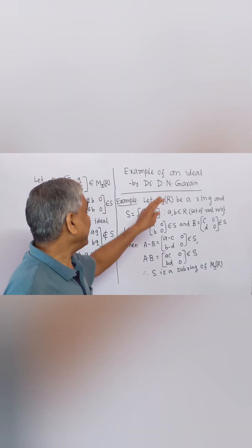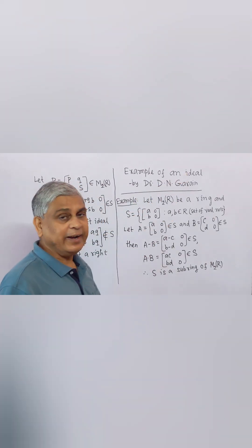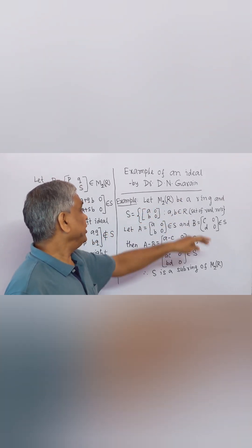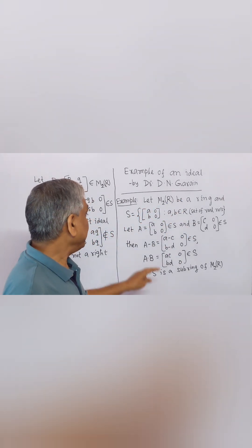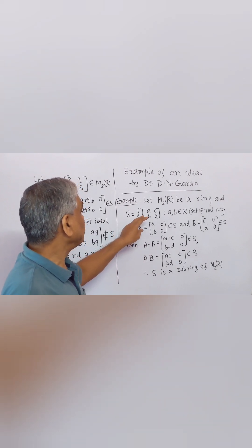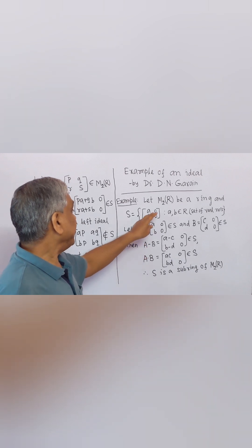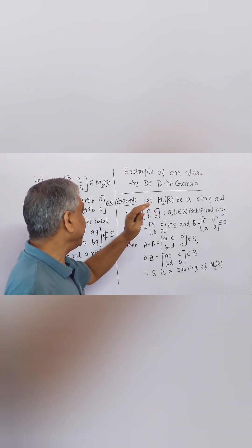Now, I will give example of an ideal. Let M2R be a ring and S be the collection of all those 2 by 2 matrices whose second column contains 0 entries.